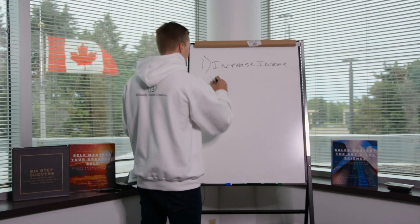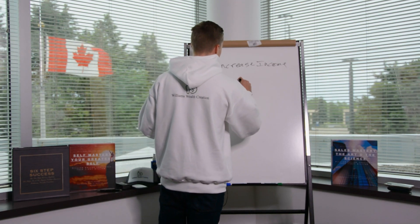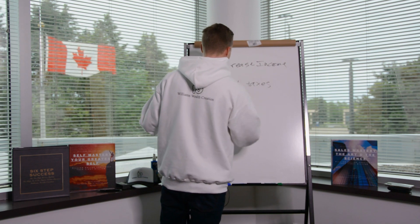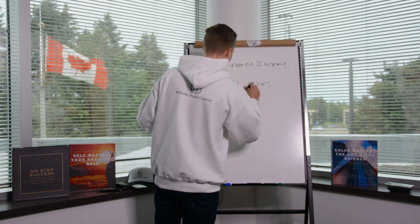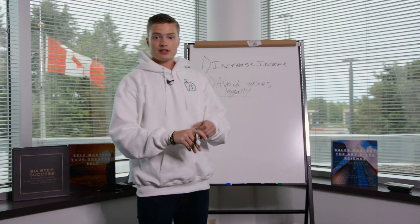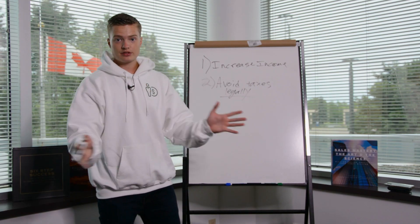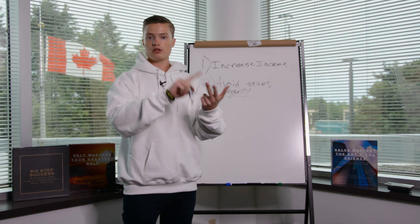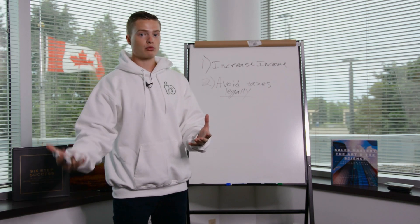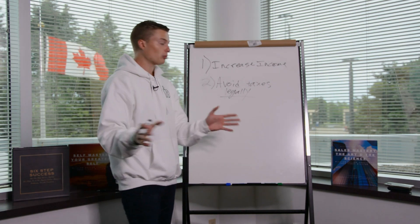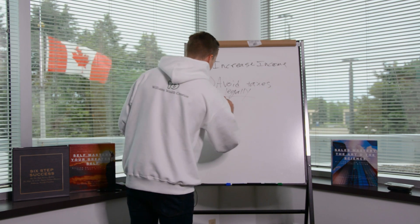Two is avoid taxes, and this has to be done legally. Avoid taxes legally. Taxes will be the biggest expense of your entire life. You want to open a corporation or a sole proprietorship, understand and utilize write-offs. Rich people, guys, rich people don't pay.